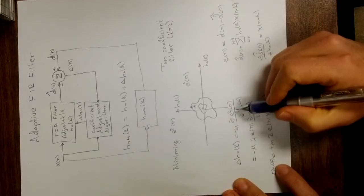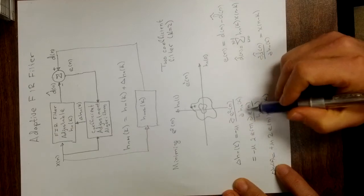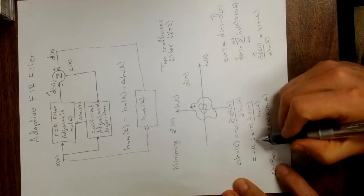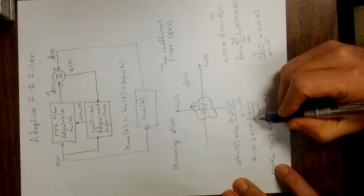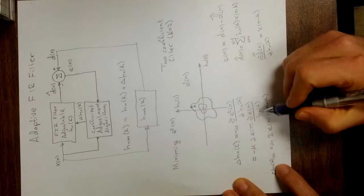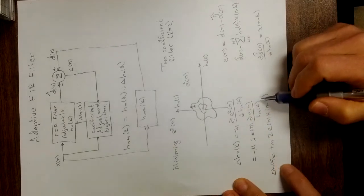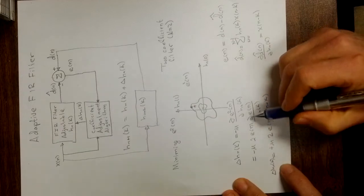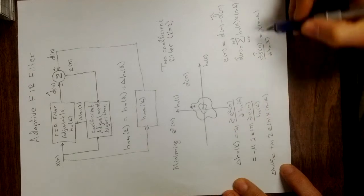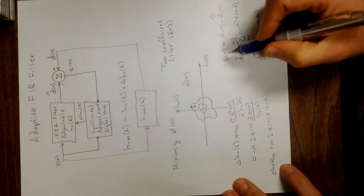To take the derivative of e squared, that would be 2 times e times the derivative of e with respect to h n of k. So notice I've got the minus mu here, the 2, and the e of n, and then I've got the partial of e n with respect to h n of k, and we're using chain rule here. Now to get these numbers, the partial of e n with respect to h n of k, we can do that over here. Here's the d and there's the e.